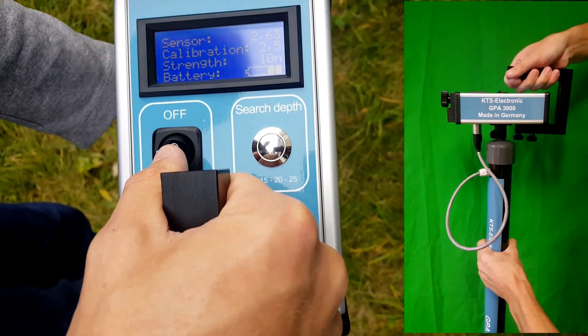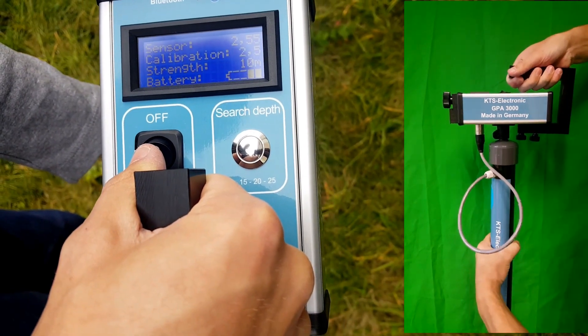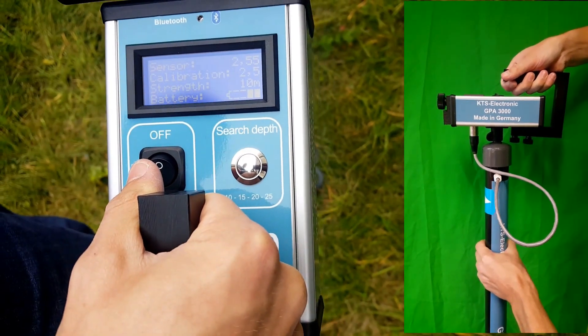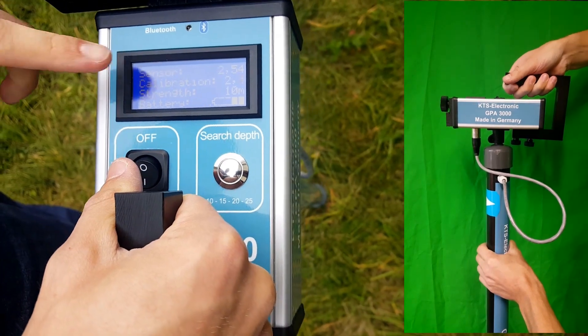Before search adjust sensor value by turning the probe left or right, until sensor value stands preferably on 2.5.